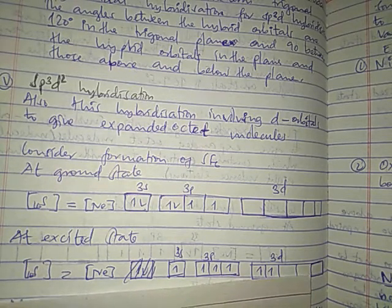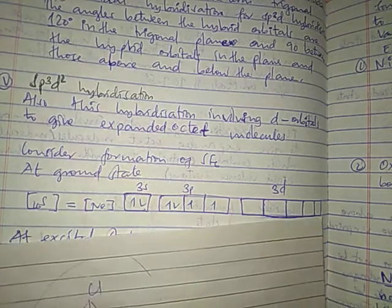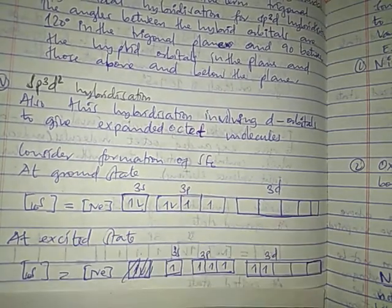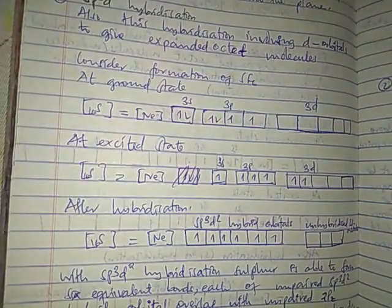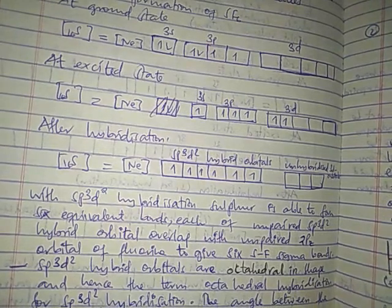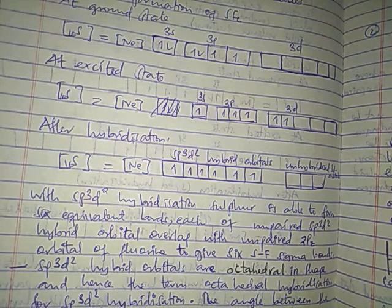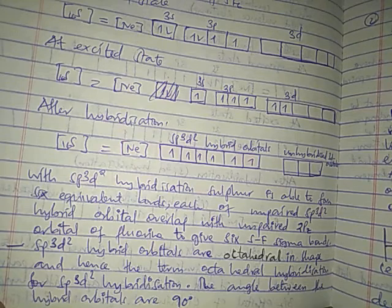The last type of hybridization is sp3d2 hybridization. This also involves d orbitals, giving an expanded octet molecule. Sulfur hexafluoride is used as an example. As with other molecules, the ground state and excited state electron configurations apply similarly. The shape of the sp3d2 hybridized molecule is octahedral. To determine the type of hybridization given a molecule, first determine how many valence electrons the central atom has, then how many empty orbitals are required to bond the surrounding atoms.